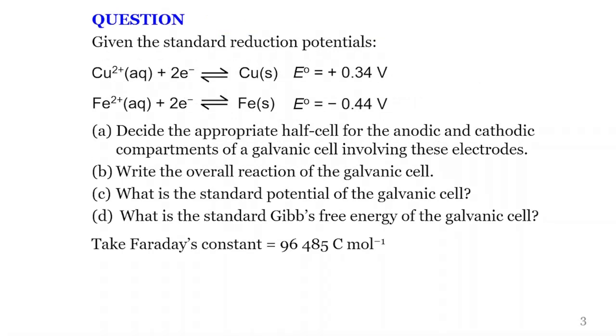The question says, given the standard reduction potentials for copper Cu²⁺ plus 0.34 volts and iron Fe²⁺ negative 0.44 volts, decide the appropriate half cell for the anodic and cathodic compartments of a galvanic cell involving these electrodes. Write the overall reaction of the galvanic cell. What is the standard potential of the galvanic cell? What is the standard Gibbs free energy of the galvanic cell? Take Faraday's constant to be 96,485 coulombs per mole.